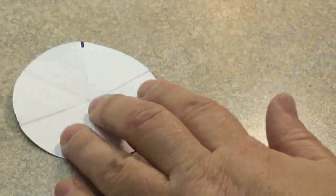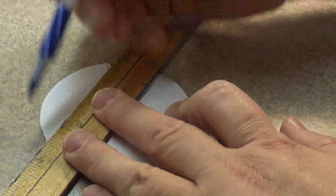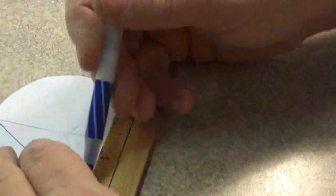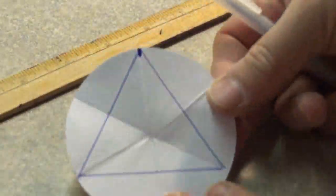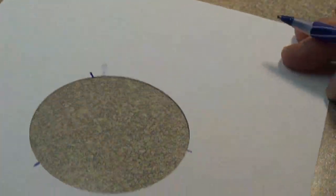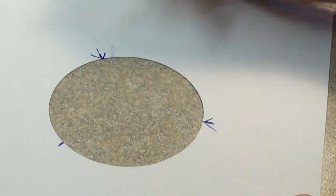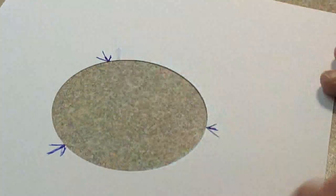So you end up with 3 marks on your paper. Now just to give you an idea of what you are going to do, I'm just going to join up those lines with a pen so you can see that it actually forms a triangle that has even sides. Equilateral I think is what they are called if I remember from geometry in school. So there we go, we marked off 3 places.